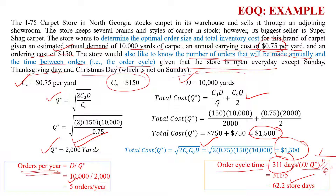I hope you understand how to find the optimum economic order quantity, the number of orders per year, and the reorder point (D × L, demand rate times lead time), as well as the order cycle time — the time between replenishments. Thank you so much. See you in the next video.